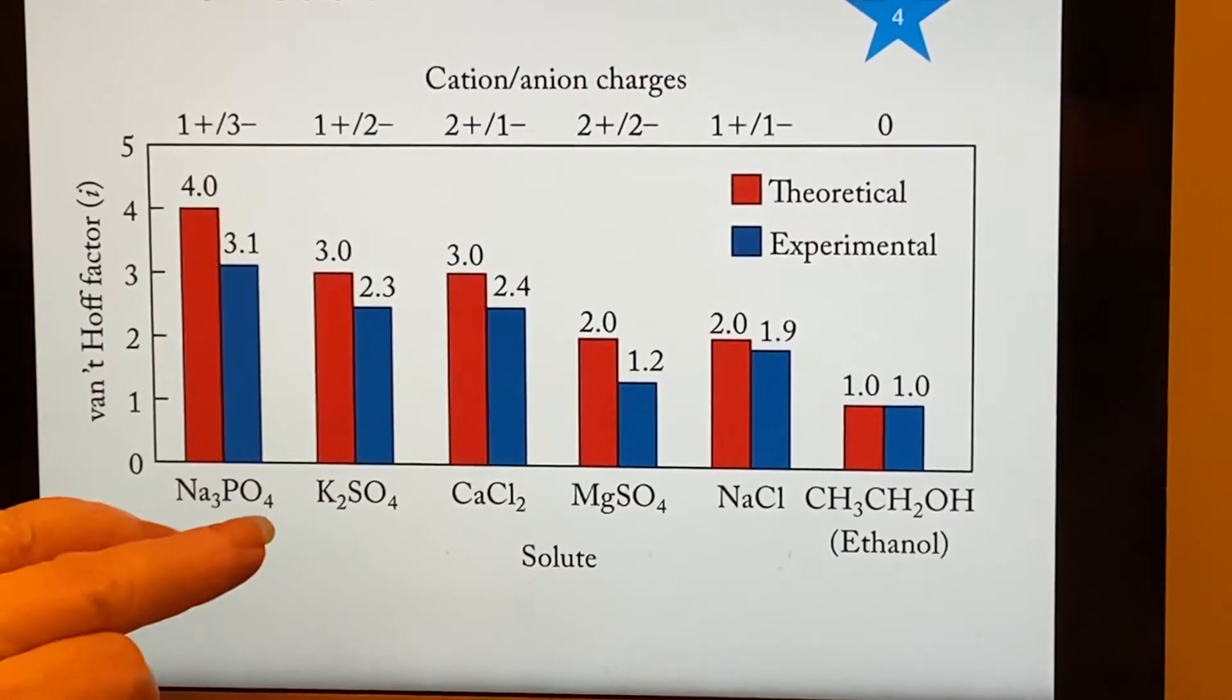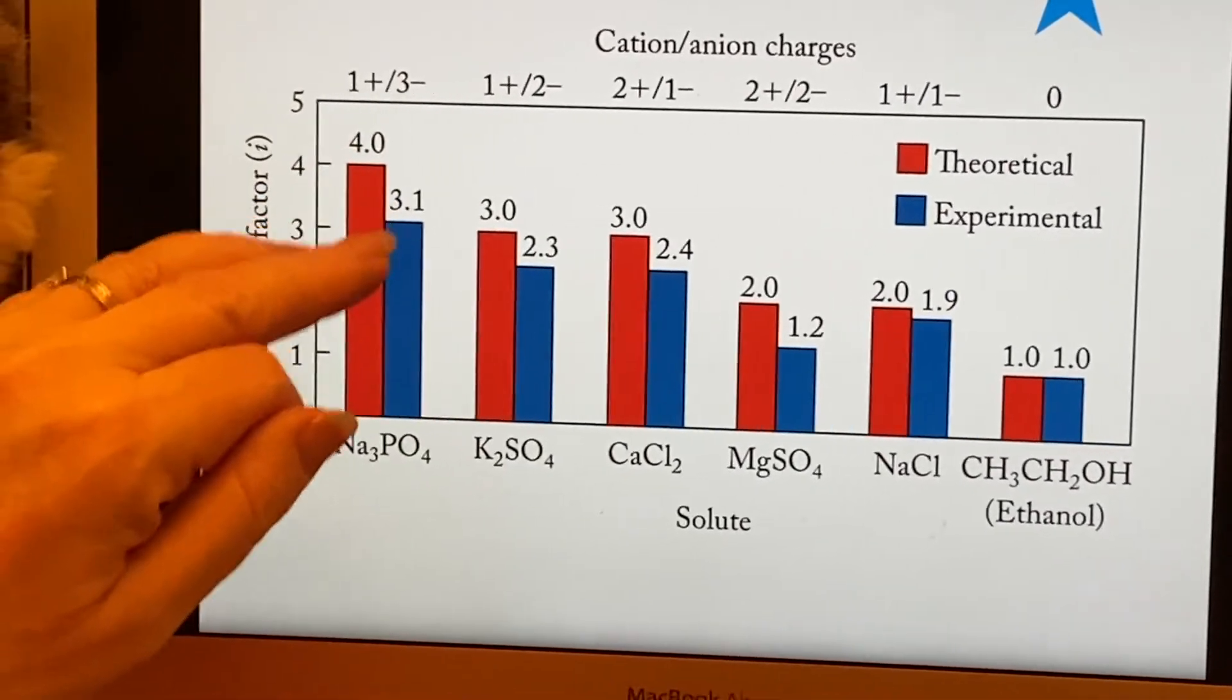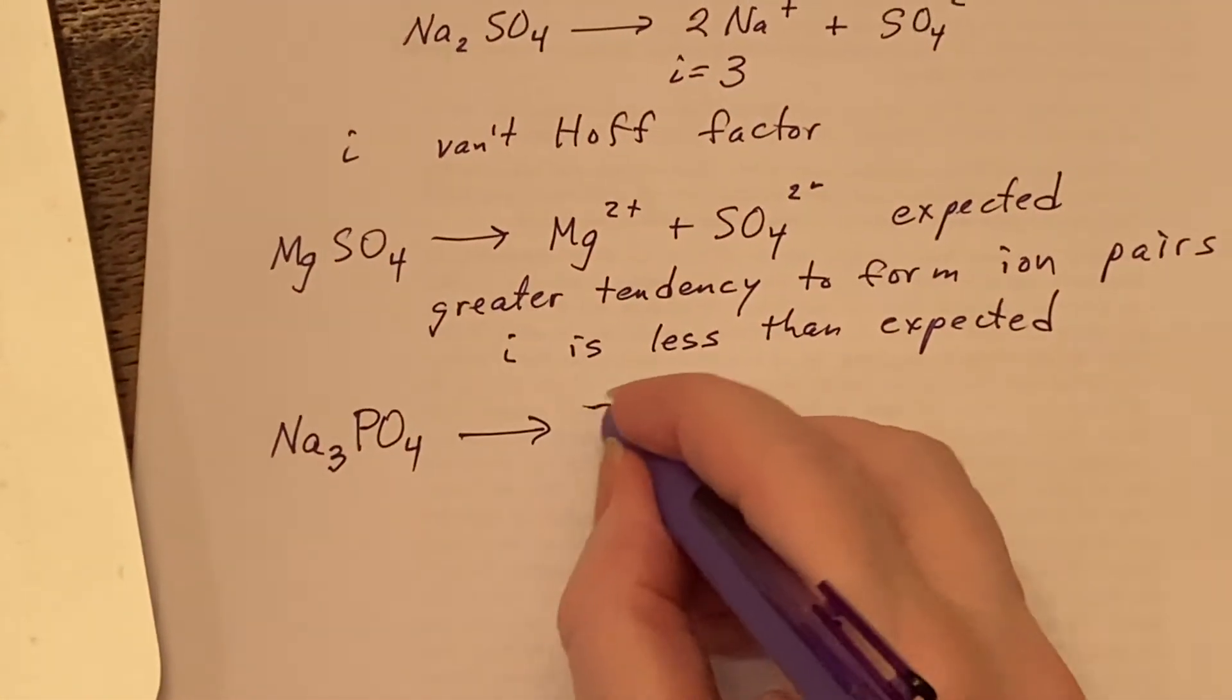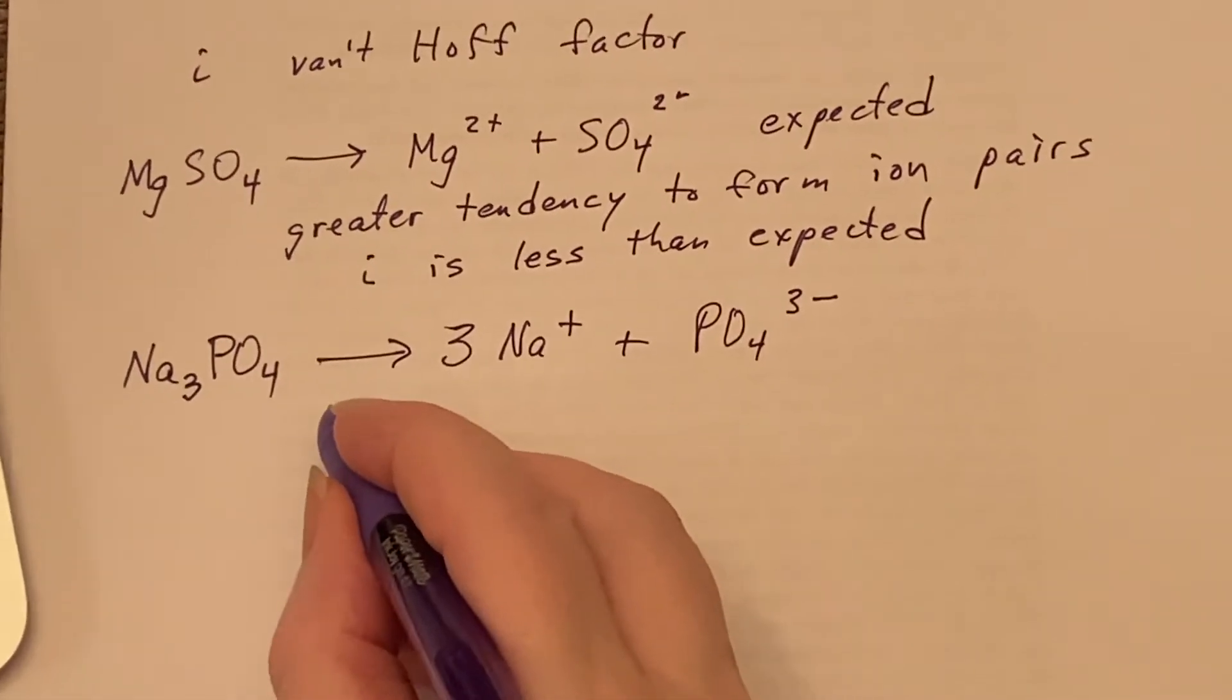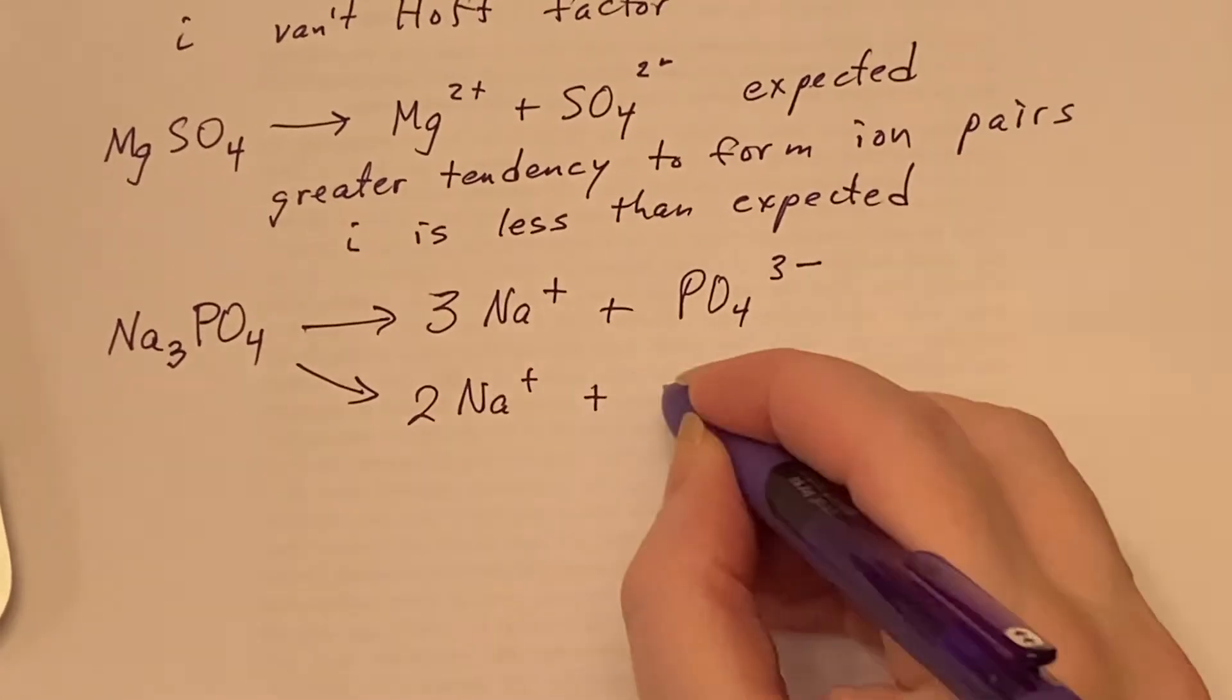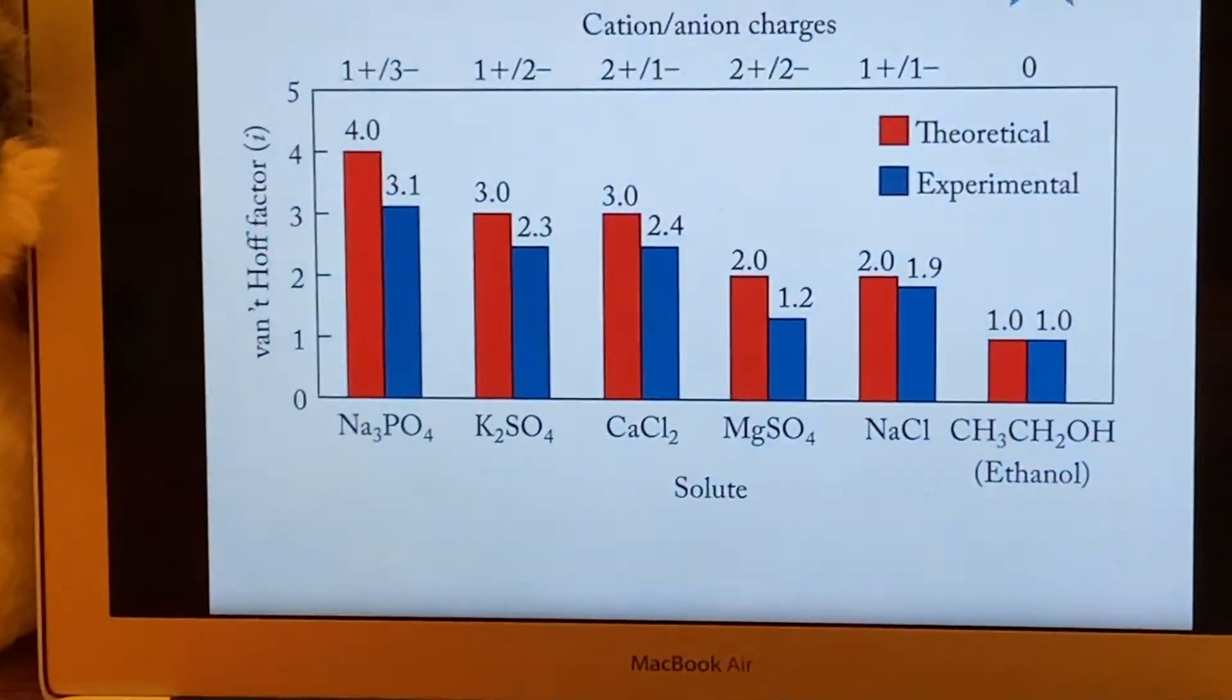When you get to something like sodium phosphate, well, it is more than three, but it is a lot less than four. This is what we thought might happen: three sodiums and a phosphate ion. But what we end up with more often is two sodiums and a sodium phosphate ion. This happens more than that does, and that's why you get these extremely interesting numbers.